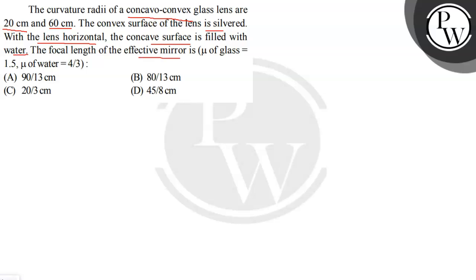The focal length of the effective mirror is what we need to find. So let's say this is the horizontal surface and we are having a concave part and we are having a convex part. So basically this part is silvered and we are filling the water into this part.